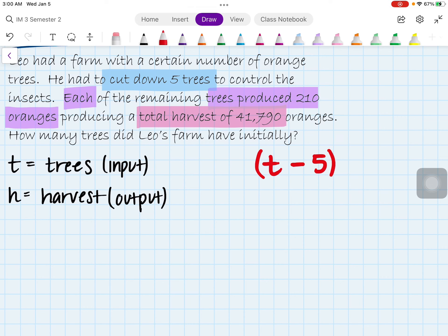Moreover, other information they're giving us here is that each tree actually produces 210 oranges. So I did put this in parentheses because since each tree produces 210 oranges, and I don't know how many there are initially, I will be multiplying my trees by 210, just because in this case that represents the number of oranges each tree produces. And all of this is going to be equal to whatever my harvest is.